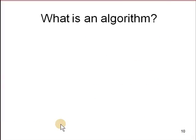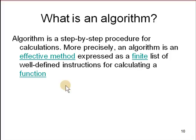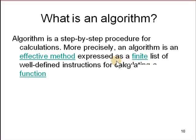So what is an algorithm? An algorithm is a step-by-step procedure. It's an effective method — meaning anyone can do it and it can be done exactly as described. It requires no creativity on the part of the person doing it, and it expresses a finite list of well-defined instructions for calculating a function. Finite means it cannot be an infinite list of instructions, and well-defined means you specify exactly what you're going to do.